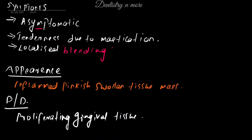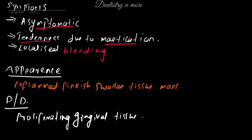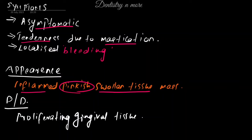As for symptoms, pulp polyp is mostly asymptomatic and will not show any symptoms. However, masticatory stress can lead to some tenderness, and there may be localized bleeding during mastication. Its appearance is a pinkish, inflamed, and swollen tissue mass.